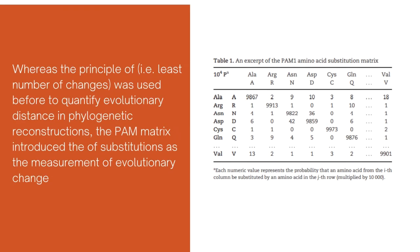Whereas the principle of parsimony — i.e., the least number of changes — was used before to quantify evolutionary distance in phylogenetic reconstructions, the PAM matrix introduced the probability of substitutions as the measurement of evolutionary distance.